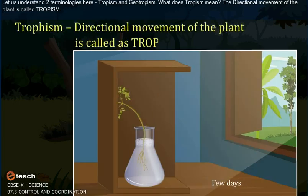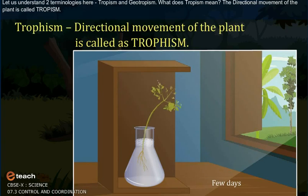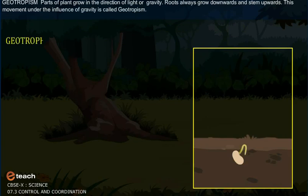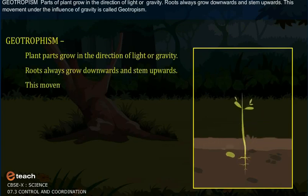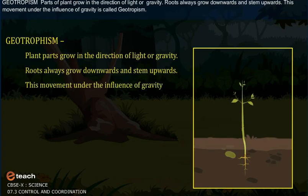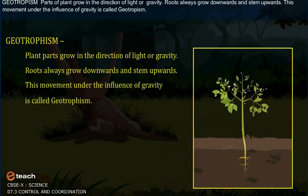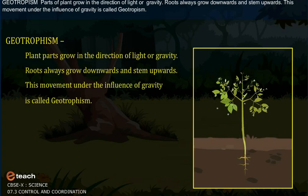What does tropism mean? It is the directional movement of the plant. Geotropism refers to how plant parts grow in the direction of light or gravity. Roots always grow downwards and the stem upwards. This movement under the influence of gravity is called geotropism.